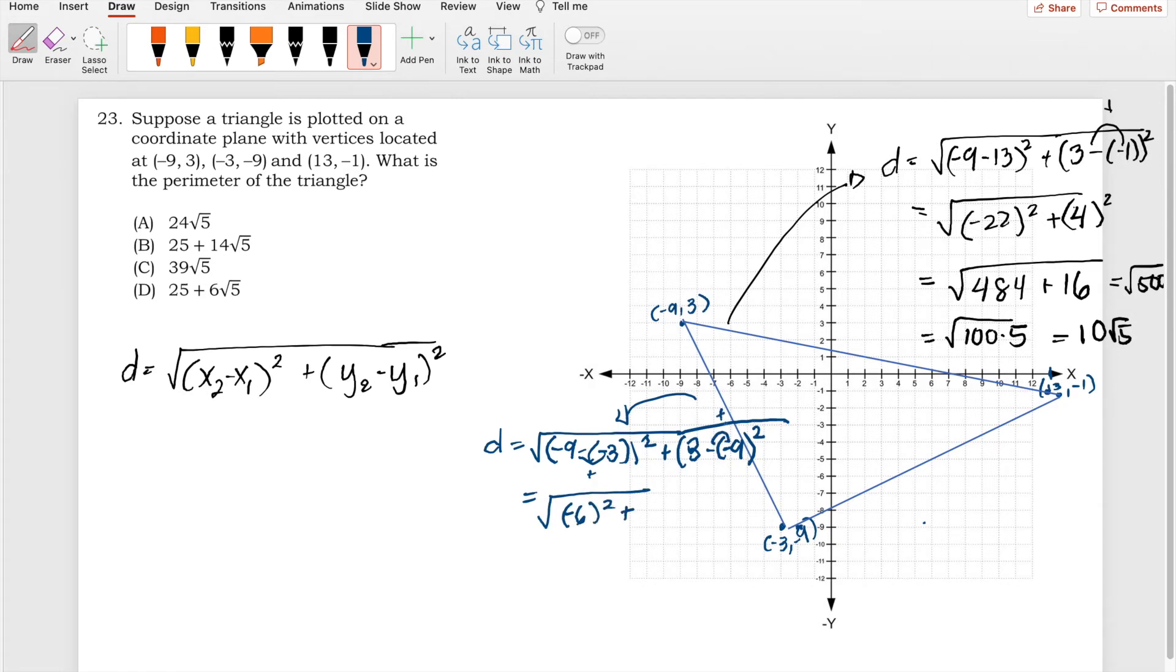So this will be positive, 3 minus -9 will be positive, so we have 12. And then squared, squared, 36 plus 144, and that is 180, or simply 9 times 4 times 5. We have a square root of 9, that's 3, and we have a square root of 4, that's 2. So we will have 6√5.